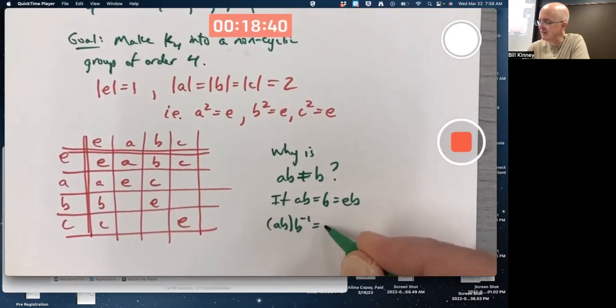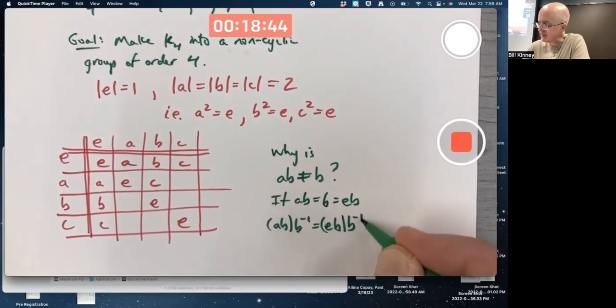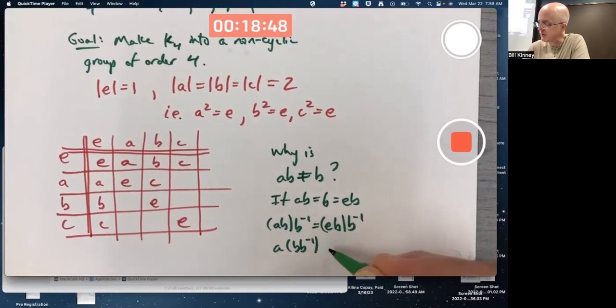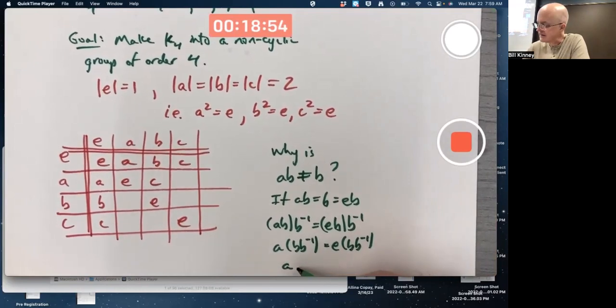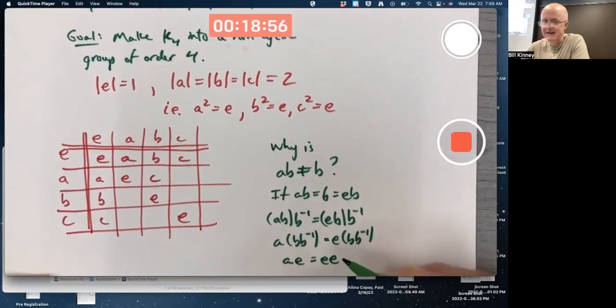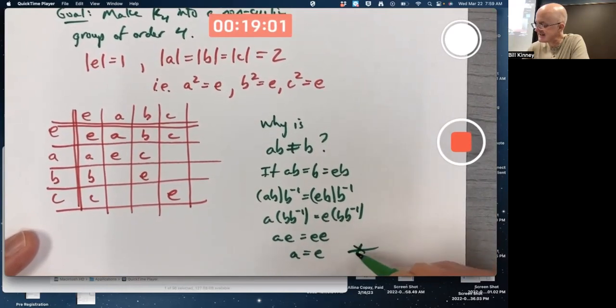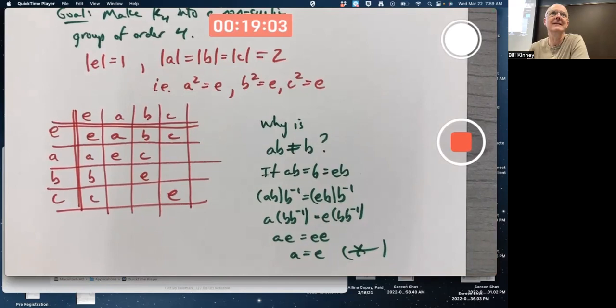Effectively multiply both sides on the right by B inverse and use the associative property if you want to be extra picky. You could write all this out and conclude that A equals E, which is a contradiction because A does not equal E.